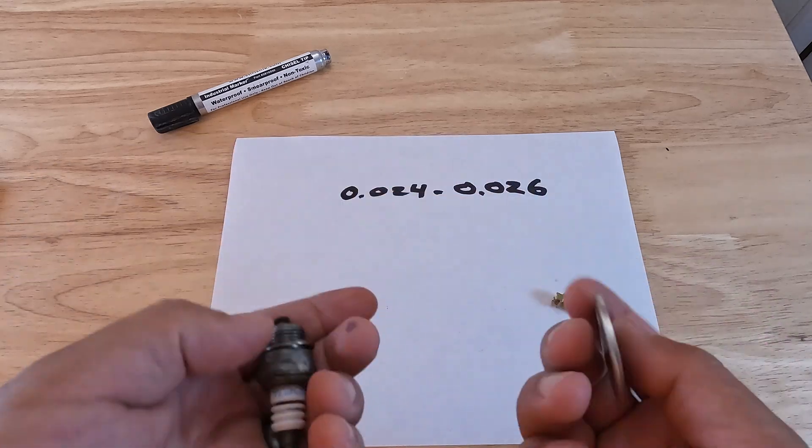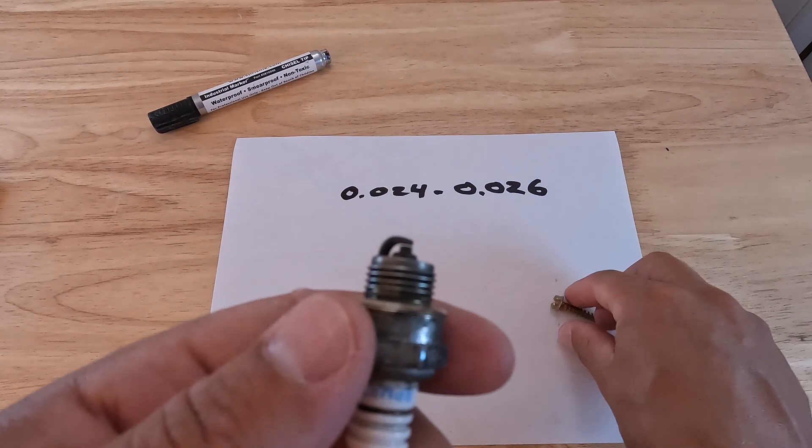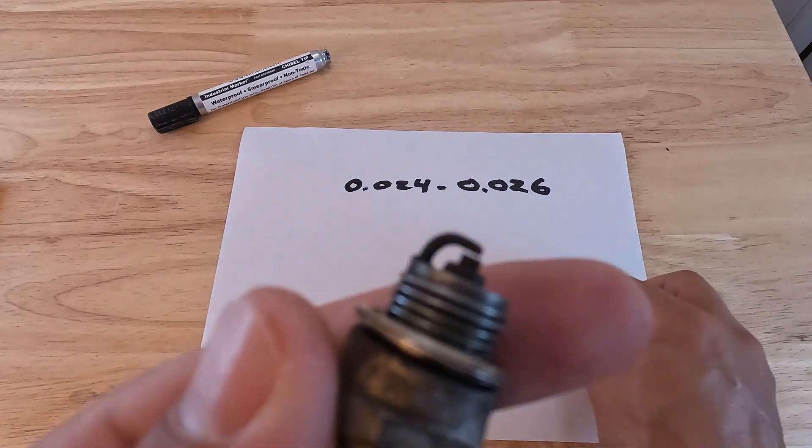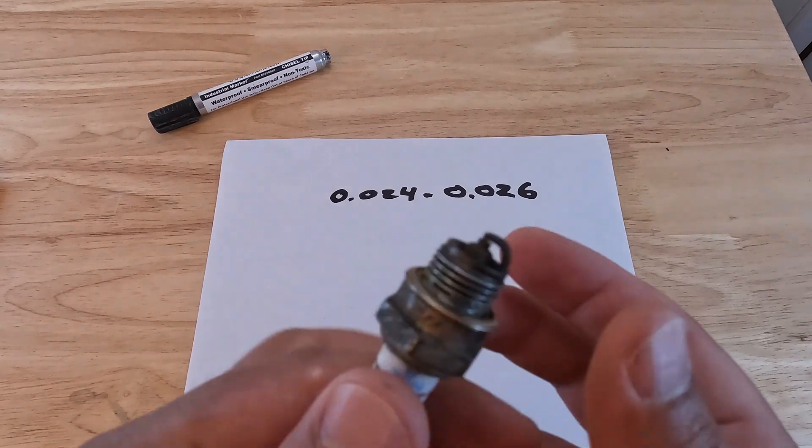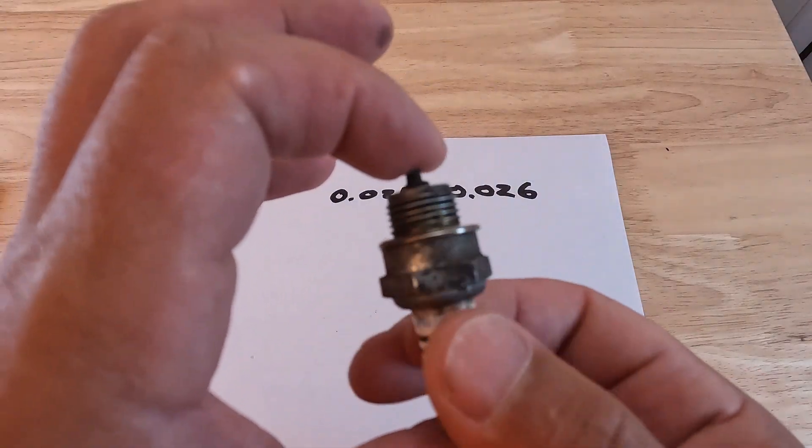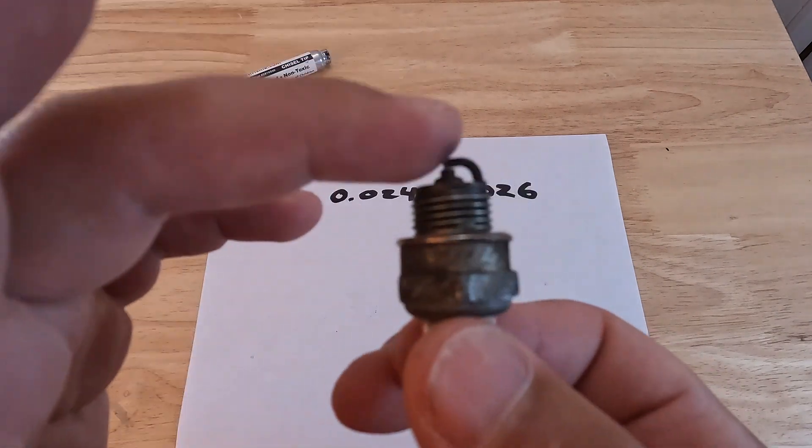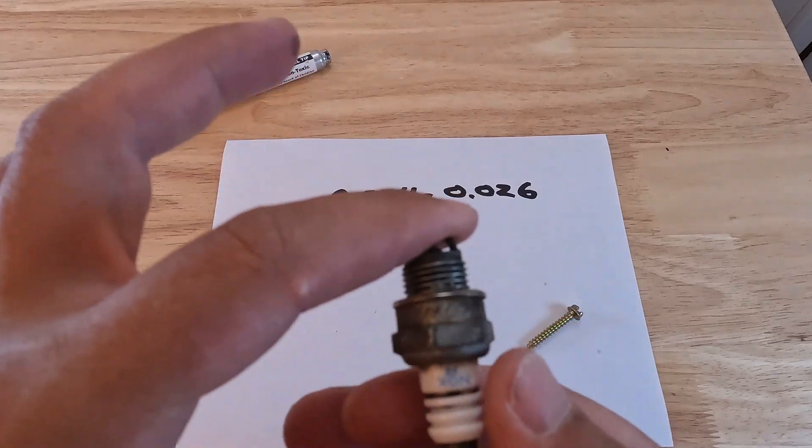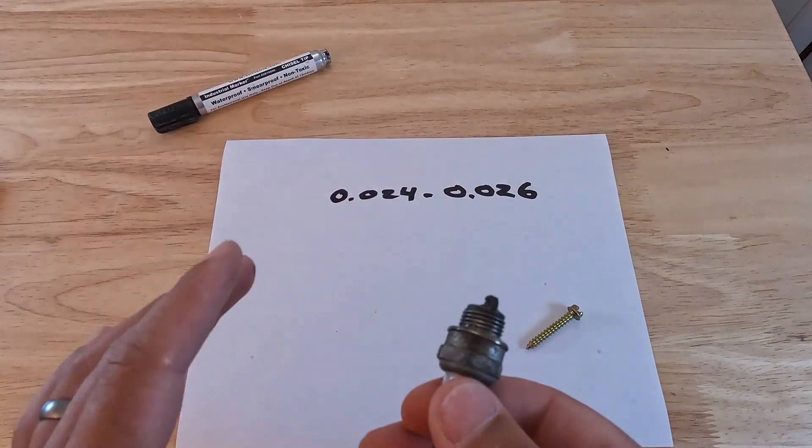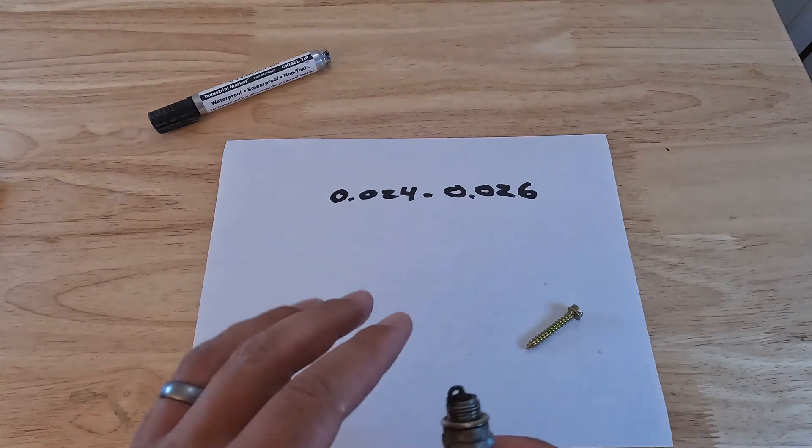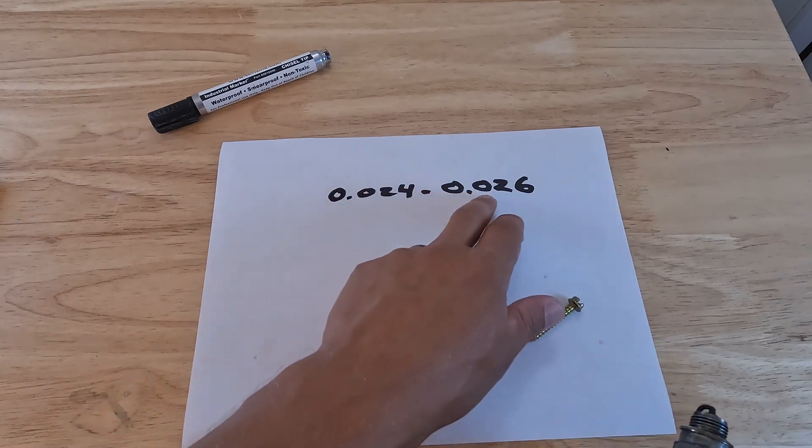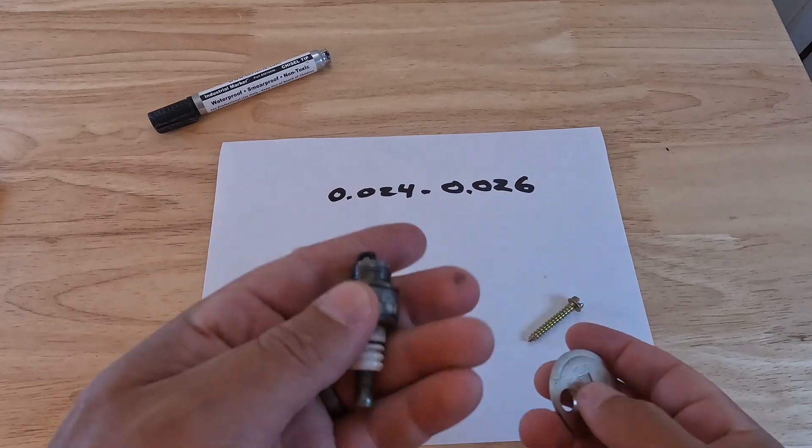You might be asking yourself, well how am I supposed to know what the correct spark plug gap distance is, which is the distance between here and here? That's something that you have to look up online based off of your engine. This spark plug came out of an Echo leaf blower, an Echo PB200. It took me about three seconds of looking online. I just Googled Echo PB200 spark plug gap and immediately it gave me the range. The range is 0.024 to 0.026 inches.